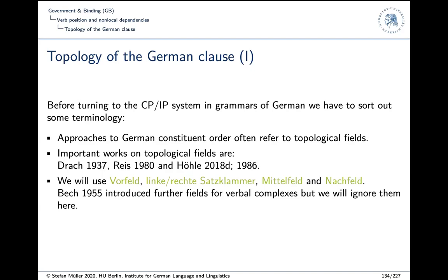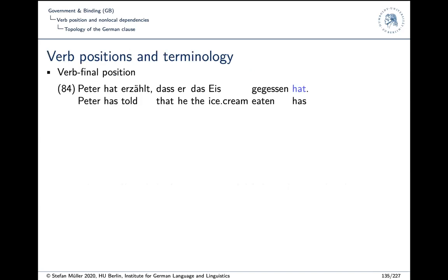There are additional fields suggested by Gunnar Beck in the 1950s — a very good book — who introduced further fields for talking about verbal complexes, though that's not important for the issues we deal with in this course. We start talking about topological fields by looking at verb positions. In example 84, the finite verb is highlighted — it's in final position. In 'Peter hat erzählt, dass er das Eis gegessen hat,' the finite verb is in final position.